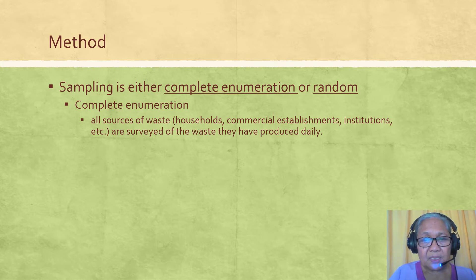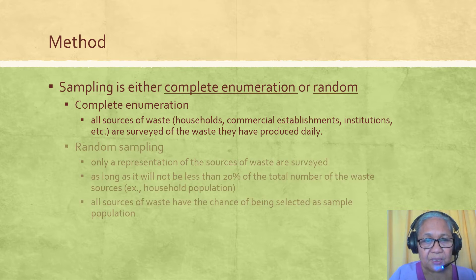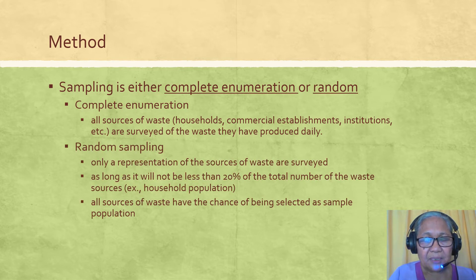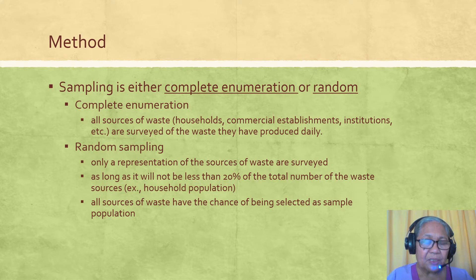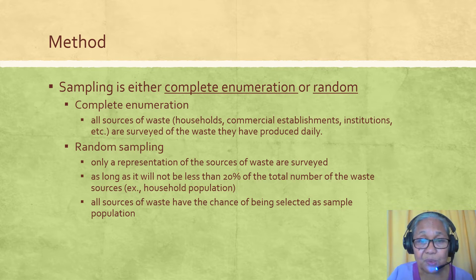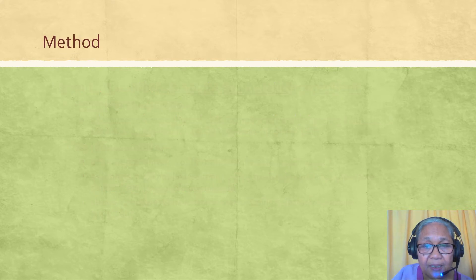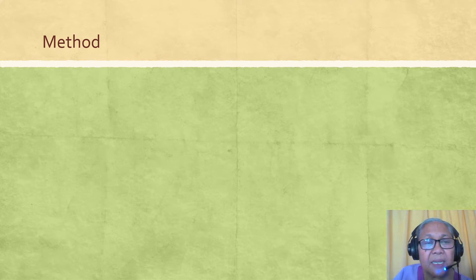In complete enumeration, all sources — households, commercial establishments, institutions, and others — are covered. Random sampling means that you are only going to sample a representation of the sources of waste, and that representation should not be less than 20 percent of the total number of waste sources. In random sampling, all sources of waste have the chance of being selected as sample population, so when you compute the 20 percent you do not pre-select which households or establishments to survey.